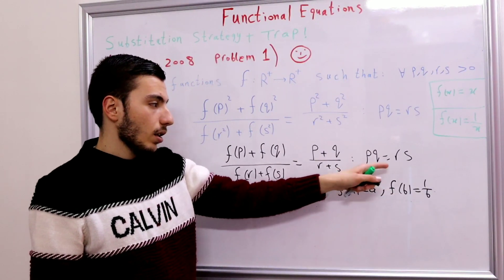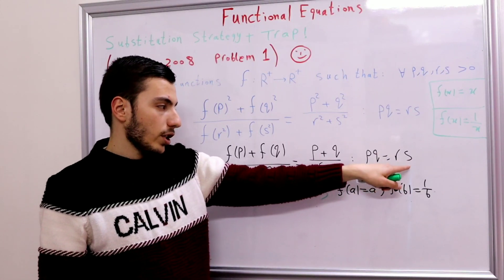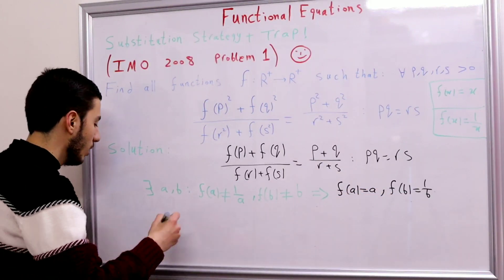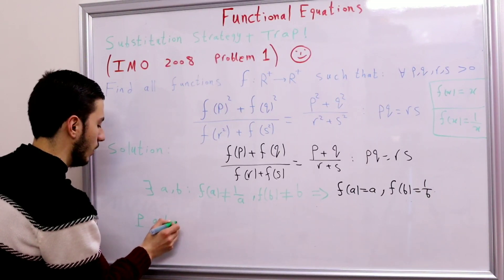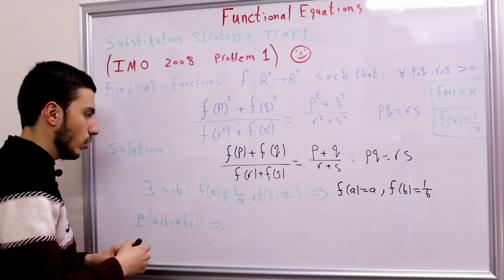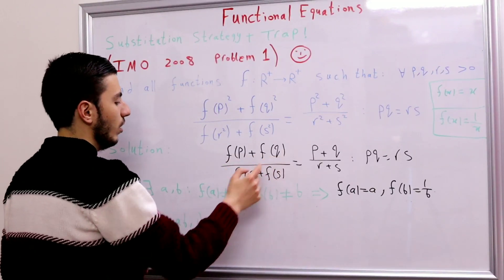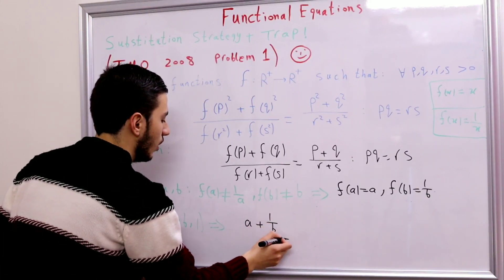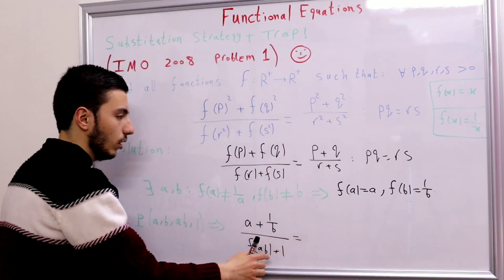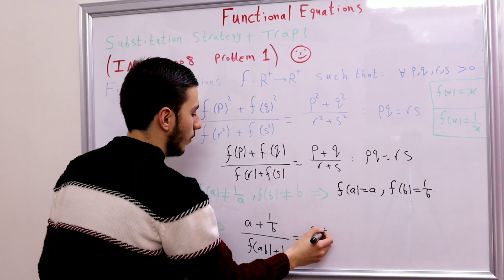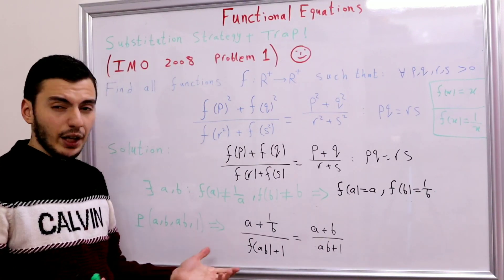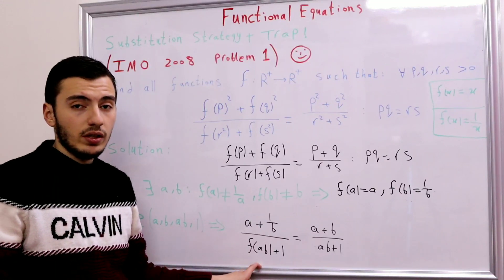Now substitute p = a, q = b, r = ab, s = 1 into the simplified equation — the precondition p·q = r·s holds since a·b = ab·1. The left-hand side becomes (f(a) + f(b)) / (f(ab) + f(1)) = (a + 1/b) / (f(ab) + 1), and the right-hand side equals (a + b) / (ab + 1).